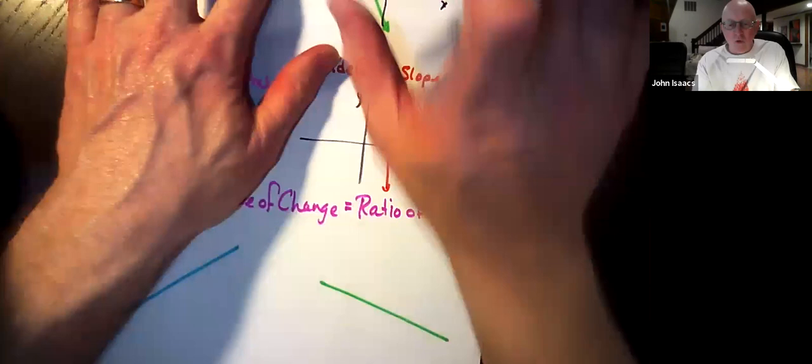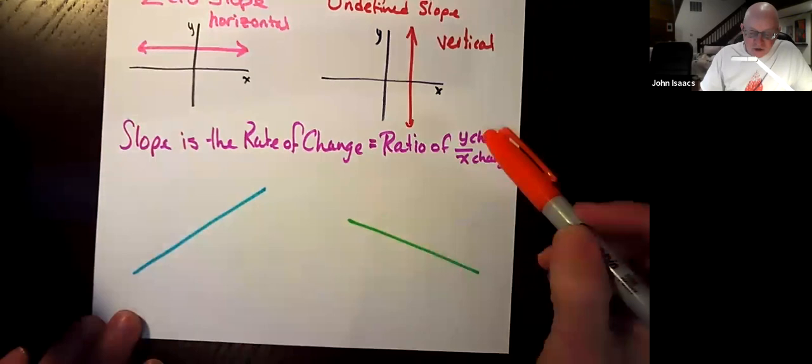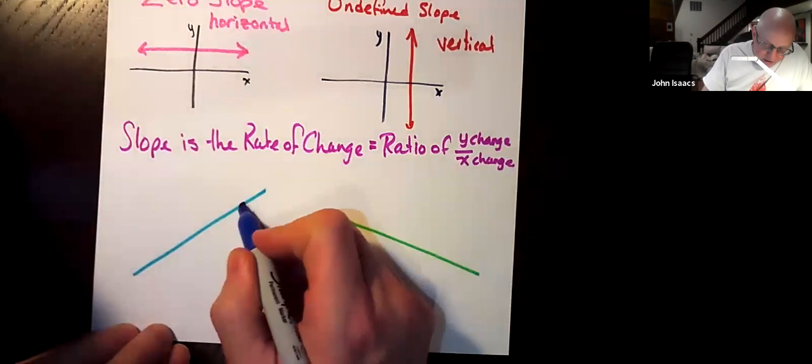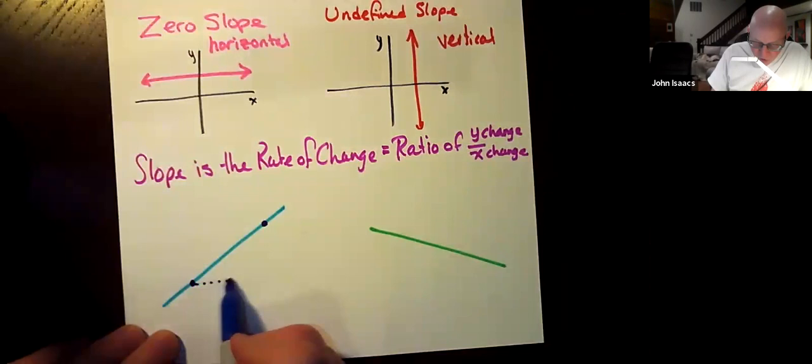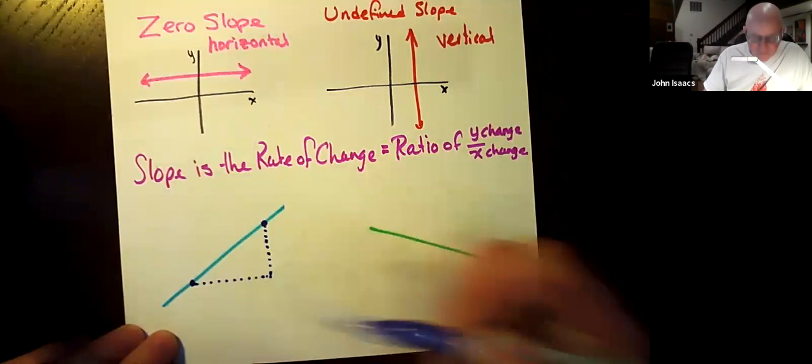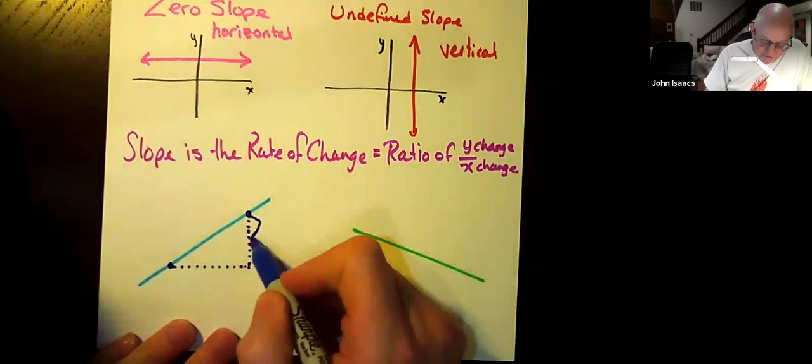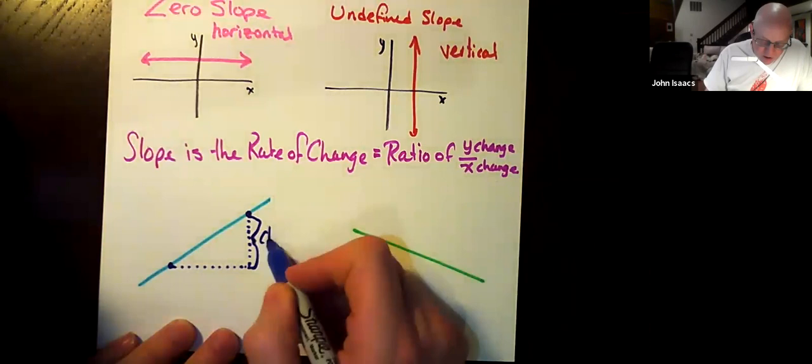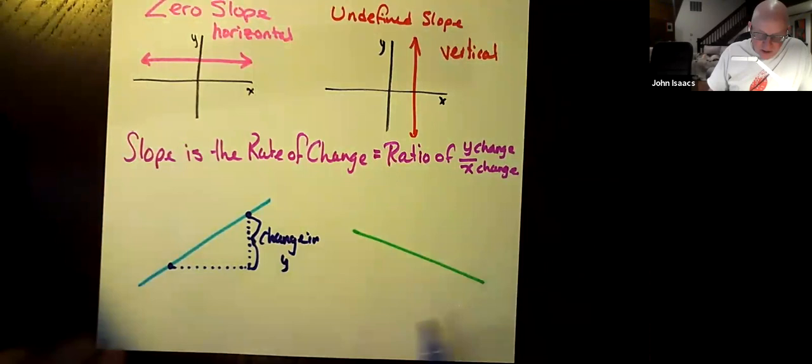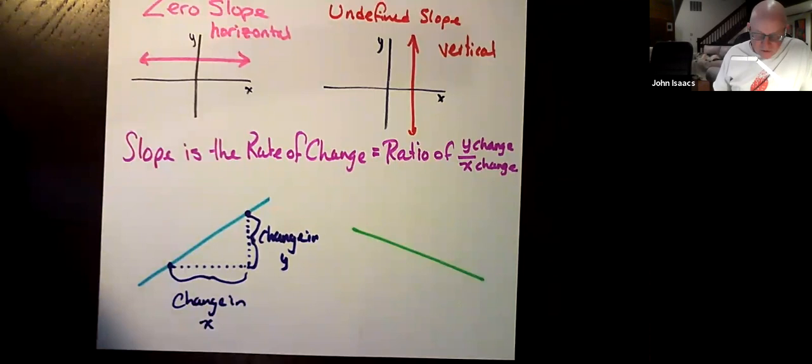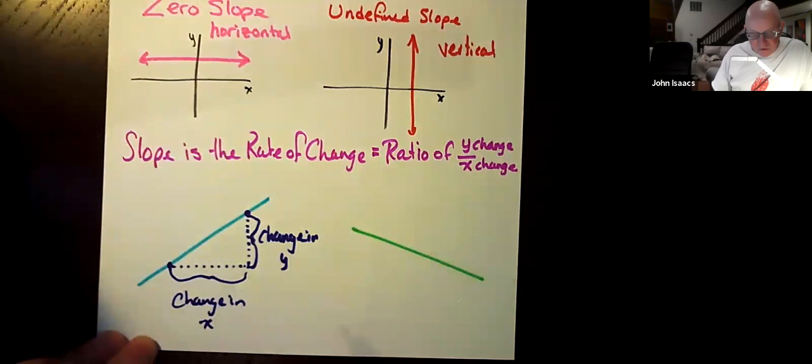Now, slope, I want you to be thinking of slope as the rate of change, the rate of change or a ratio of change in y over change in x. In any graph that you have of a line, a straight line, you can pick any two points on that line and you're going to draw a right triangle. And what you want to do to find the slope is you calculate how far this is. That I'm going to call the change in y.